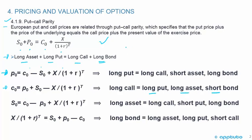You can create a synthetic call by being long the put, long the asset, and short the bond — we're just rearranging the algebra. If I want C0 to be positive, I move the bond from the long side to the short side, so I'm long the put, long the asset, and short the bond.